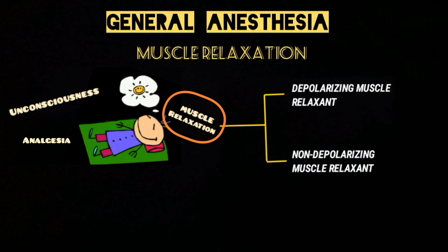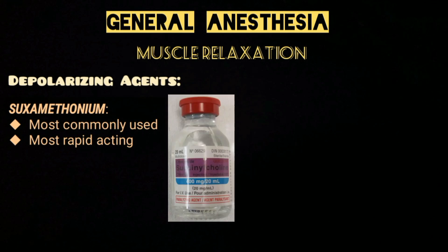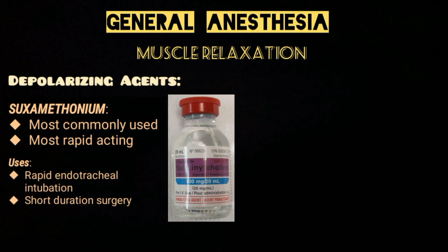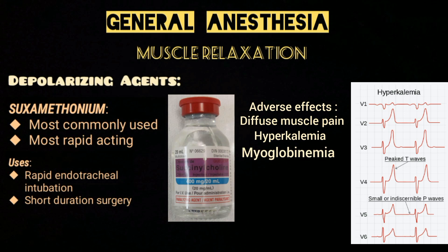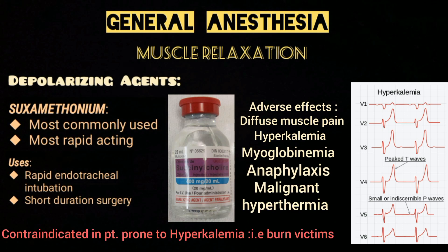General anesthesia also provides muscle relaxation, achieved by using depolarizing or non-depolarizing muscle relaxants. Suxamethonium is the most commonly used depolarizing agent and is the most rapidly acting of all muscle relaxants, making it useful when rapid endotracheal intubation is required or during short-duration surgery. Its adverse effects include diffuse muscle pain, hyperkalemia, myoglobinemia, anaphylaxis, and malignant hyperthermia, so it is contraindicated in patients prone to hyperkalemia, especially burn victims.